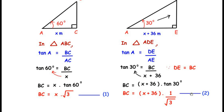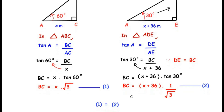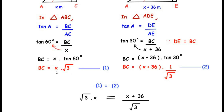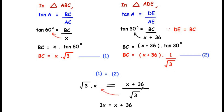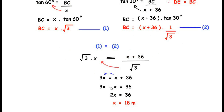Equating Equation 1 and Equation 2, since both equal BC: X√3 = (X + 36)/√3. Multiplying both sides by √3: 3X = X + 36. Rearranging: 3X − X = 36, so 2X = 36, giving X = 18 meters.